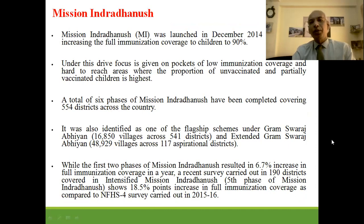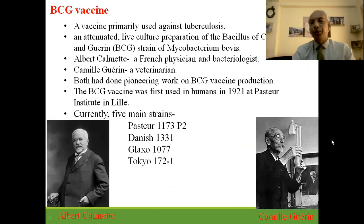Mission Indradhanush was launched in December 2014 aiming to increase immunization coverage in children up to 90%. Focus was given on low immunization pockets, and it was launched in six phases in 544 districts, later spread to all areas. In the two phases of Mission Indradhanush, immunization coverage was increased to a satisfactory level.